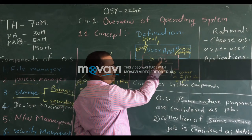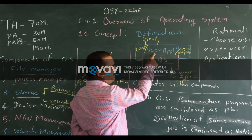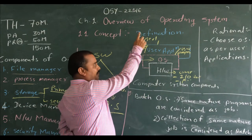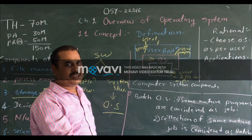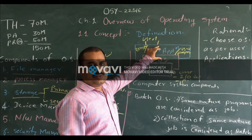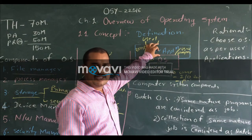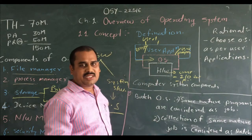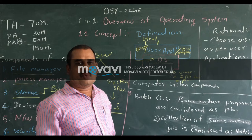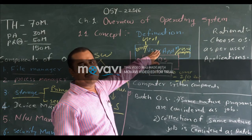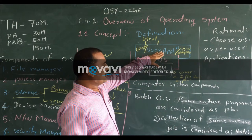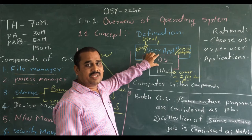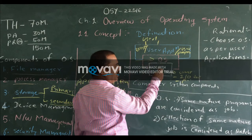This diagram clearly shows that the operating system is placed in between user applications and the hardware of the computer system. So we can say that the user performs his job or his applications through the operating system. So the operating system is nothing but a software program which creates interaction between hardware and user applications, and helps to fulfill the user requirements. The operating system creates interaction between the user and the computer hardware.